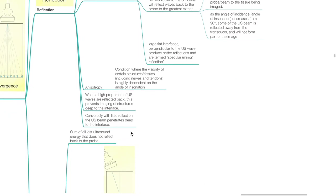Anisotropy is the condition where the visibility of certain structures or tissues, such as nerves and tendons, depends highly on the angle of insonation. When a high proportion of ultrasound waves are reflected back, this prevents imaging of structures deep to the interface. Conversely, with little reflection, the ultrasound beam penetrates deep to the interface.